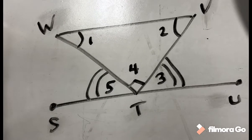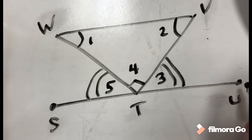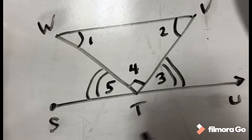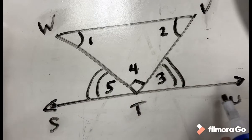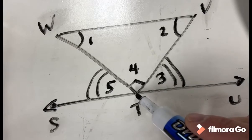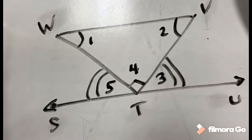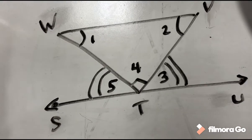Question 2: name a pair of opposite rays in the picture. A pair of opposite rays would be ray TU, which goes this way, and ray TS, which goes this way. Notice they make a straight line — opposite rays must make a straight line. A lot of students think TV and TW are opposite rays, but they do not create a straight line.